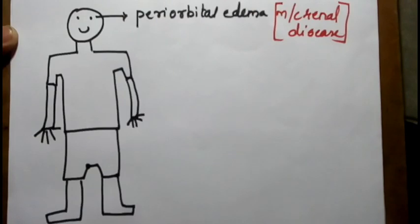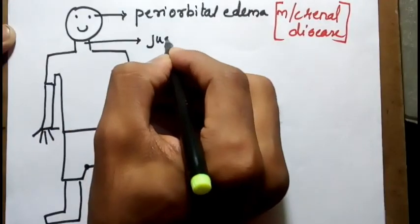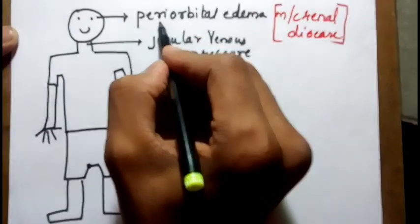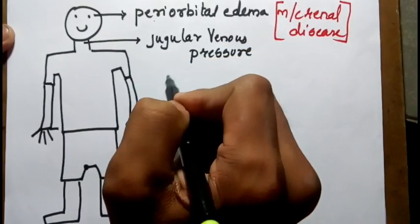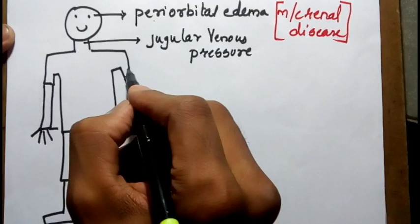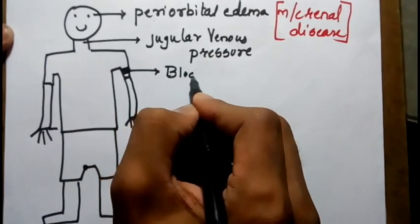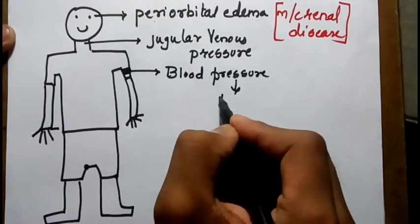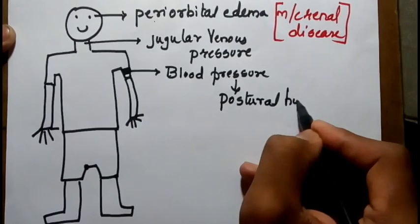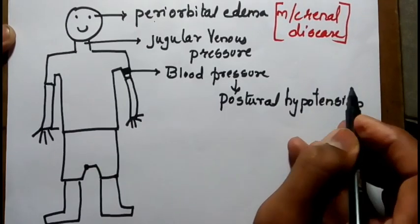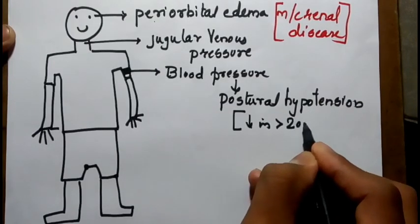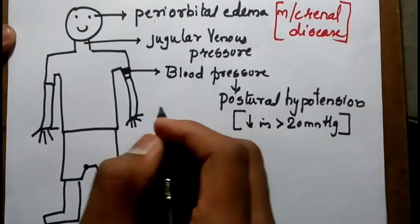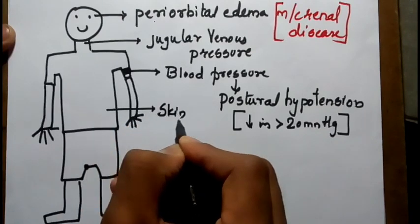We must check for jugular venous pressure. We must also check for blood pressure using a sphygmomanometer, and check for postural hypotension — that is, a decrease of more than 20 mmHg on standing in systole.